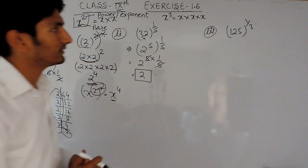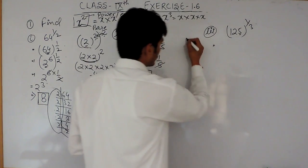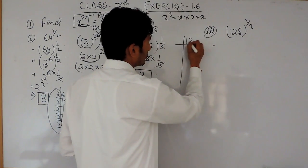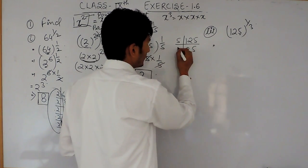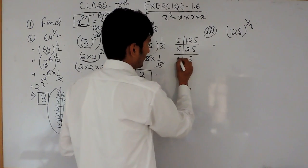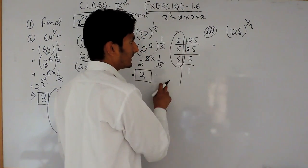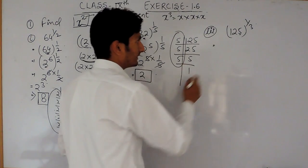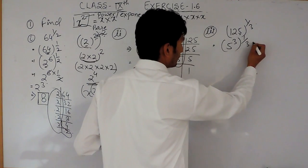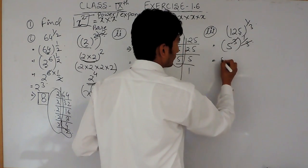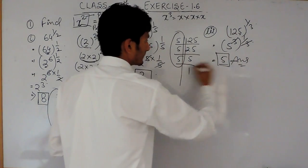Now you have to find the value of 125 raised to power 1 by 3. First, find the factors of 125: that is 5, 5, and 5, giving us 1. So 125 can be written as 5 multiplied by 5 multiplied by 5, that is 5 raised to power 3, raised to power 1 upon 3. The 3 and 1 upon 3 cancel, so 5 will be the answer for this third part.